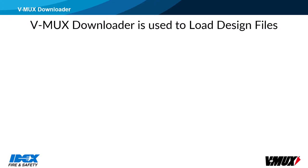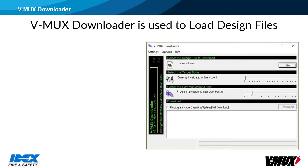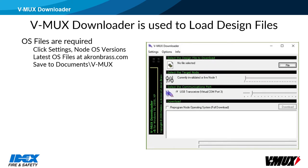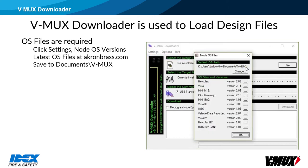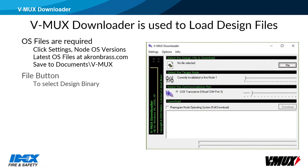The VMux downloader program is used to load design binary files into the nodes. Node operating system files are required — VMux downloader will not work unless the OS files are installed. The latest OS file versions are available at akronbrass.com. Click Settings, then Node OS versions, to see what OS files are installed. These files need to be saved to the VMux folder in My Documents in order for downloader to find them. Click the file button to select the design binary file.